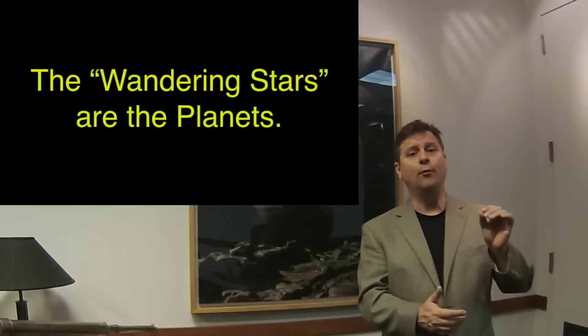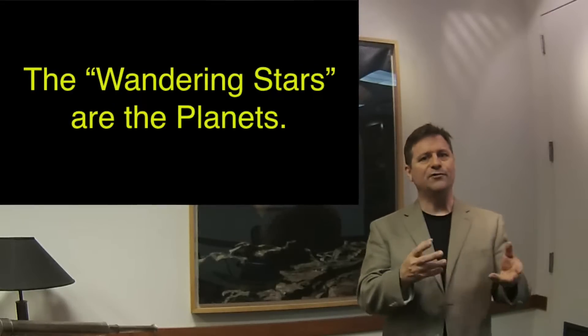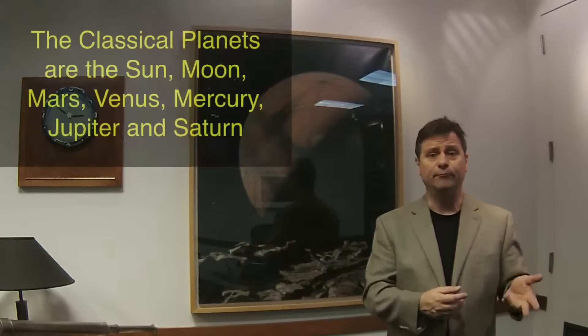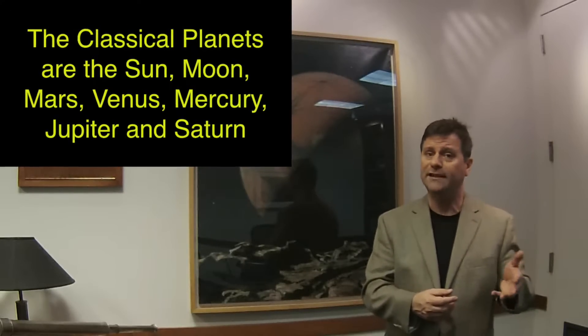But then we find that there are wandering stars, some stars that don't stay fixed with respect to the others, and in the classical terms of the wandering stars we have the Sun, of course, the Moon. We have the Sun, the Moon, Mars, Mercury, Venus, Jupiter and Saturn.